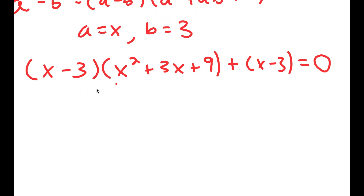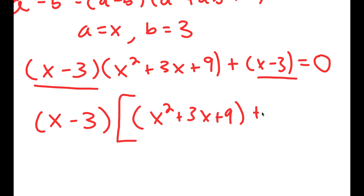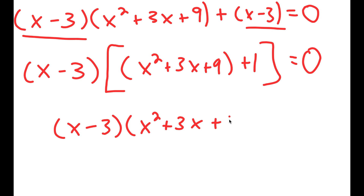Now, notice how both of these terms have x minus 3 in them. So what I'm going to do is factor out x minus 3. So I get x minus 3 times x squared plus 3x plus 9 plus 1 is equal to 0, which is equal to x minus 3 times x squared plus 3x plus 10 is equal to 0.